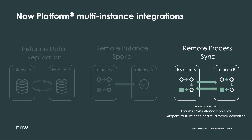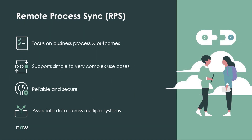But what if you need to set up a stateful, bidirectional sync that requires alignment of only specific data elements between systems? This is where our third option, Remote Process Sync, comes into play. Remote Process Sync supports everything from simple to very complex multi-instance integration use cases and allows process owners to focus on business logic, not underlying data synchronization nuances.